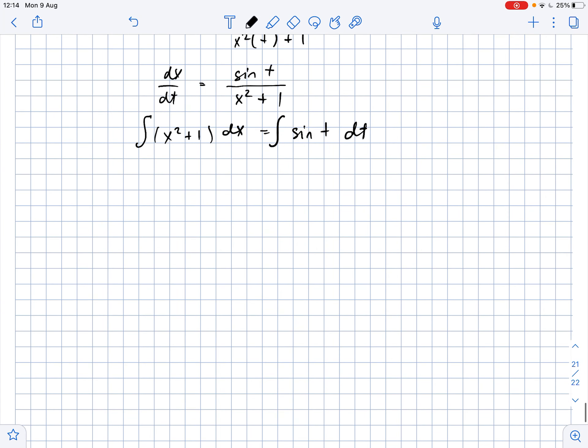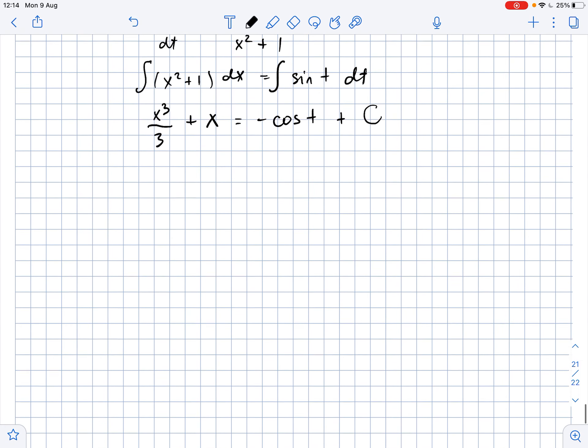Now we just integrate both sides. On the left side, we get that x cubed over 3 plus x equals, and on the right side, it's negative cosine of t plus c,